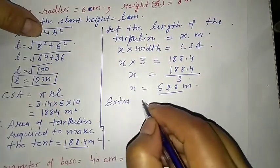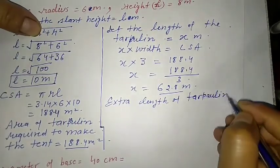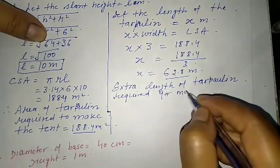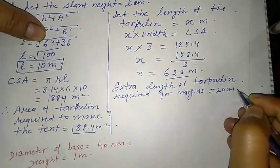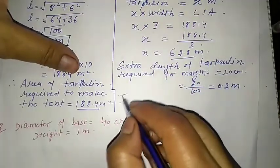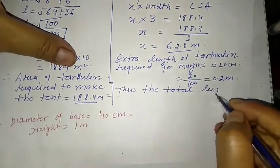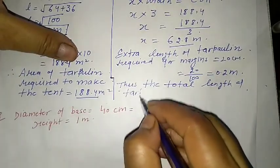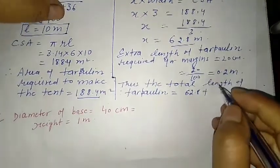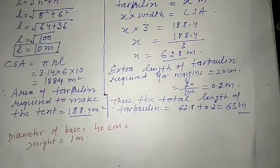The extra length of tarpaulin required for margins is 20 cm = 20/100 = 0.2 m. So the total length of tarpaulin = 62.8 + 0.2 = 63 m. This is the answer for Question 5.